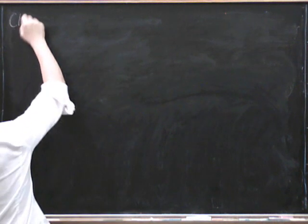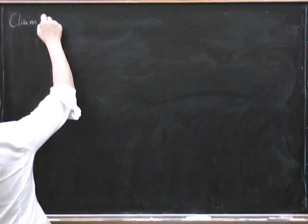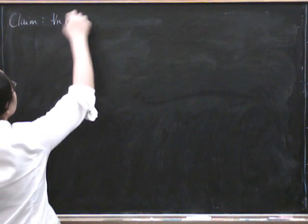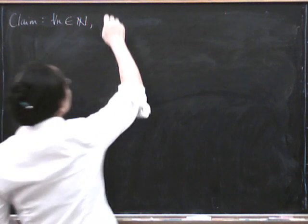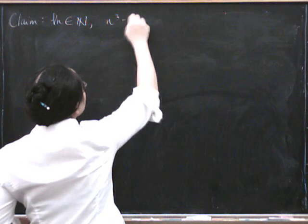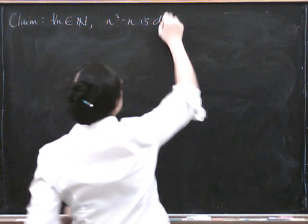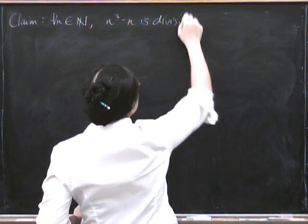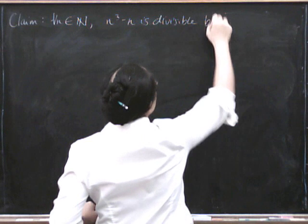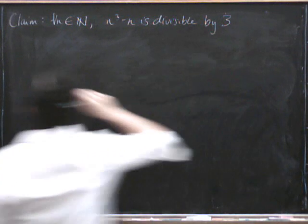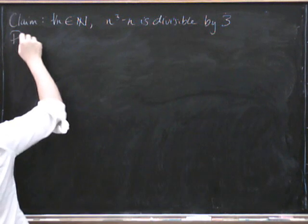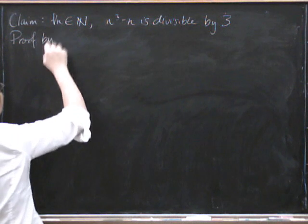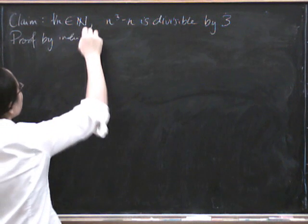The claim is that for all natural numbers n, n cubed minus n is divisible by 3. So let's do a proof by induction.